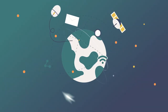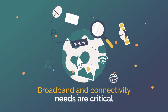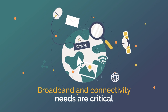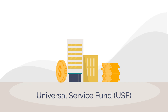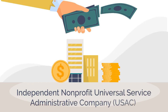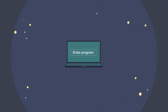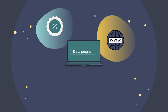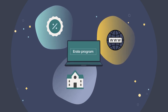E-RATE is one of four programs that focuses on places where broadband and connectivity needs are critical. The funds for these programs come from the Universal Service Fund, which is administered by the independent nonprofit Universal Service Administrative Company. The E-RATE program specifically provides discounts for internet-related services and equipment to all school districts and library systems in the United States.